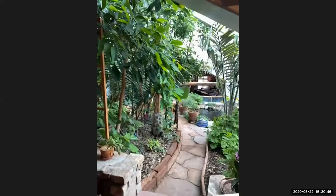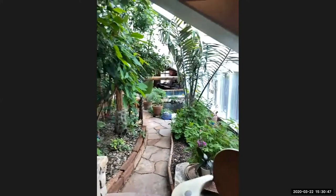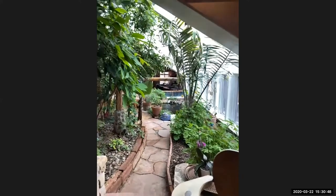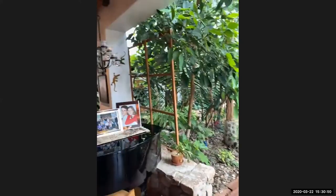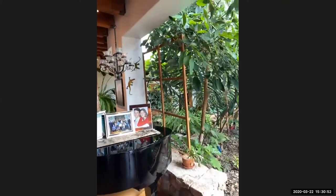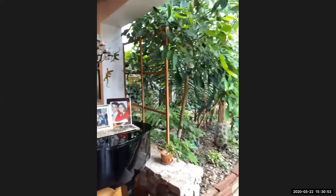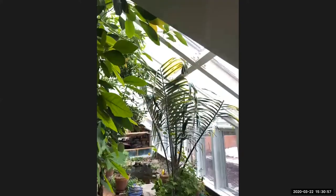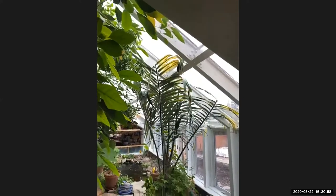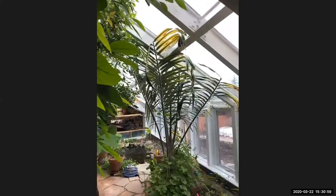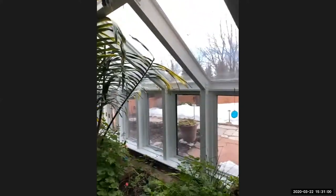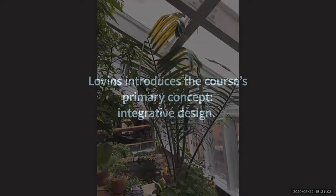Here in the jungle we're growing over a hundred kinds of generally tropical plants. This is a big passive solar space — snowy outside, tropical inside.